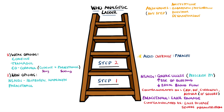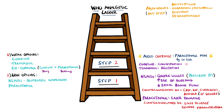So if a patient is given cocodamol — typically in tablets of 30mg codeine and 500mg paracetamol — you need to make sure they're not going over the safe limit of paracetamol. As well as other opioid side effects, codeine more commonly causes constipation, while tramadol more commonly produces agitation.